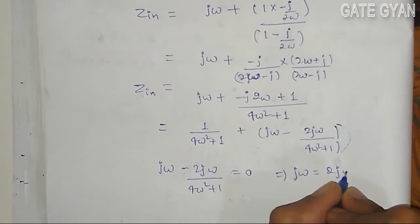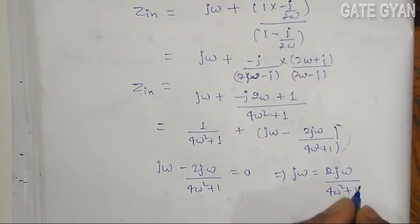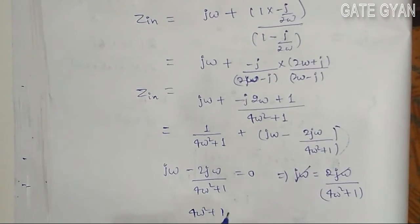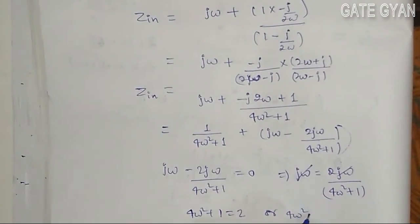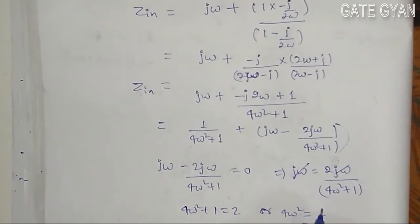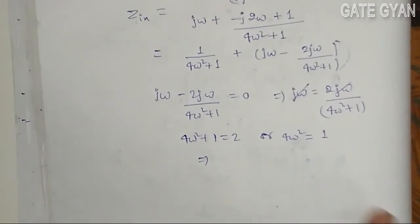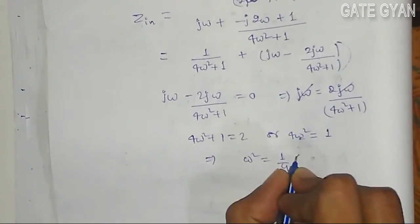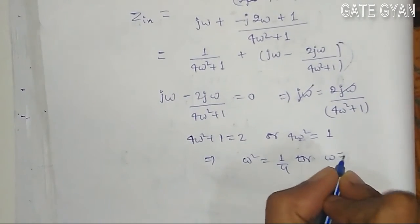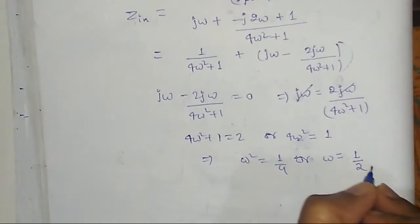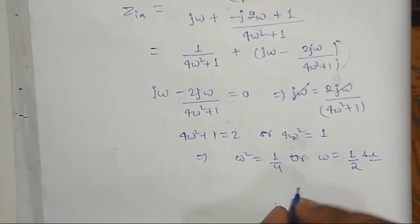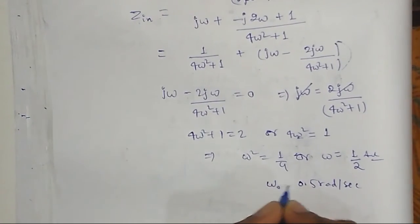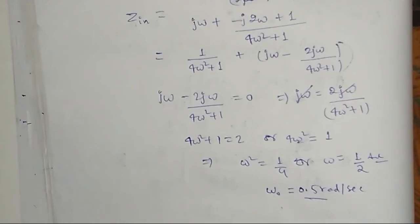Which implies that this resonant frequency omega square is going to be 1 by 4, or my omega is going to be 1 by 2. So our resonant frequency is going to be 0.5 radian per second.